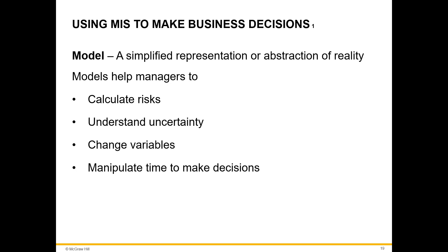A model is a simplified version of reality. Its main function is to help managers calculate risks, understand uncertainty, change variables, and manipulate time to make decisions. MIS relies on models that mathematically express the relationship between variables in an organization.